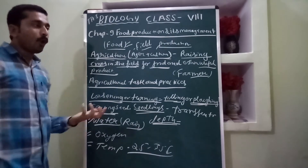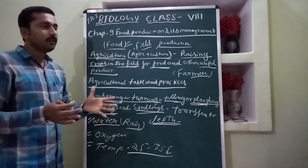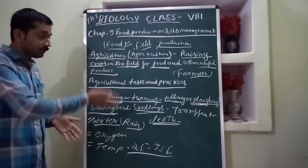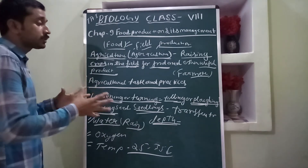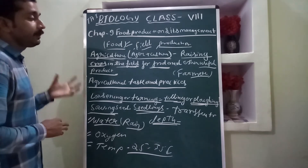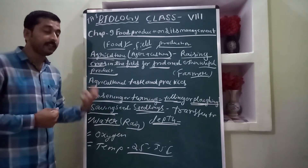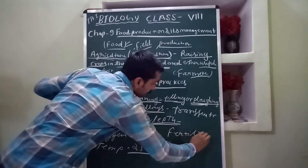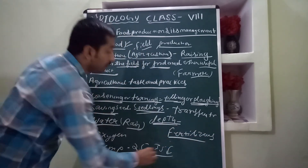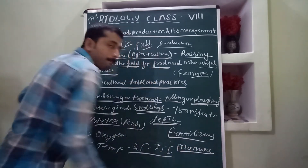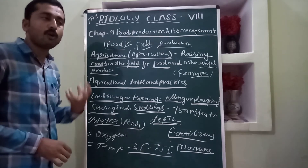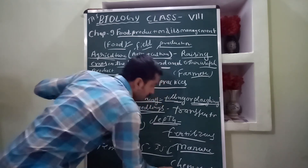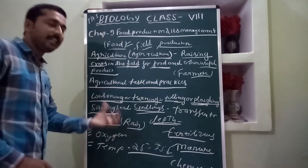Seedlings means germinating plants from seeds and then transferring them to the crop field or nurseries to supply to different crop fields. After that, we use two different types of nutrients to increase the productivity and fertility of the soil: chemical fertilizers and manure.